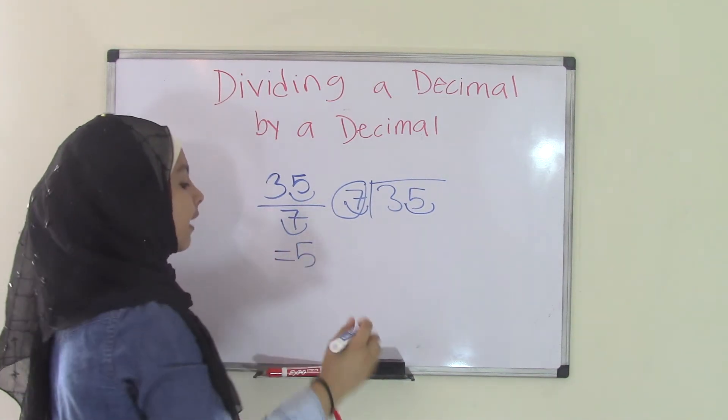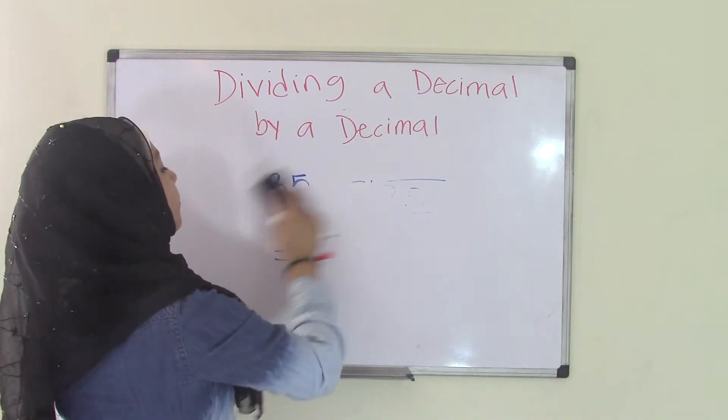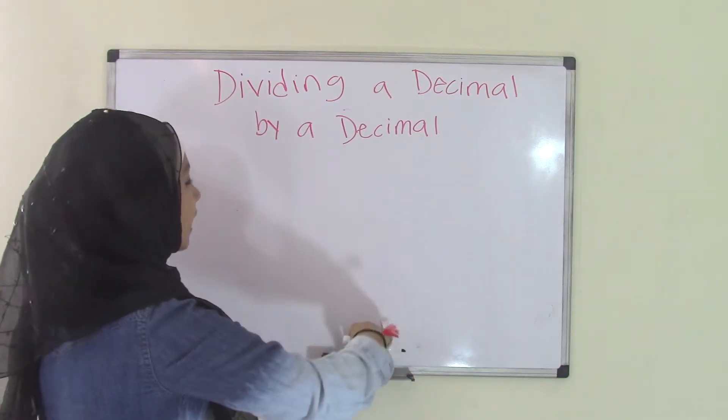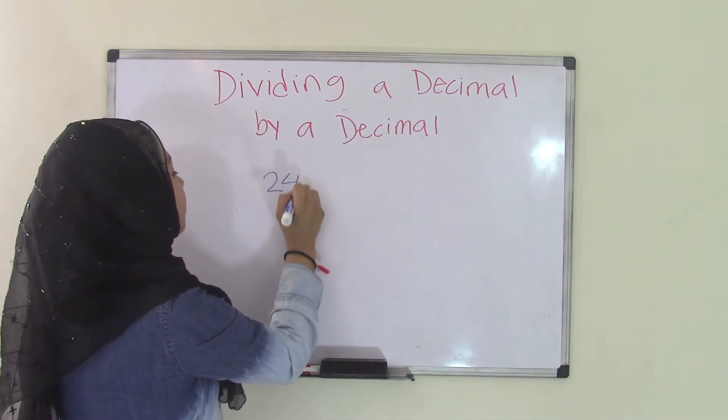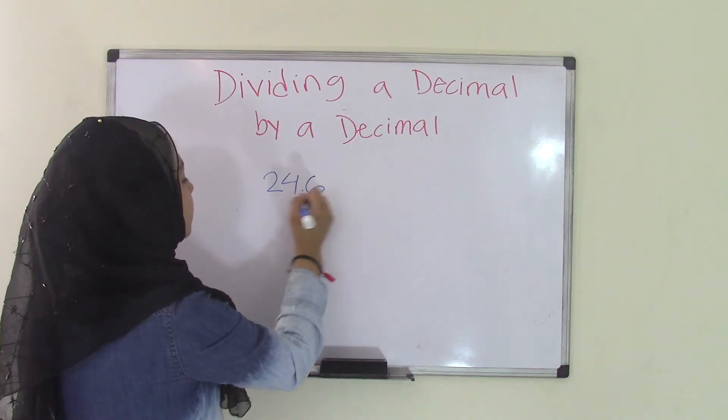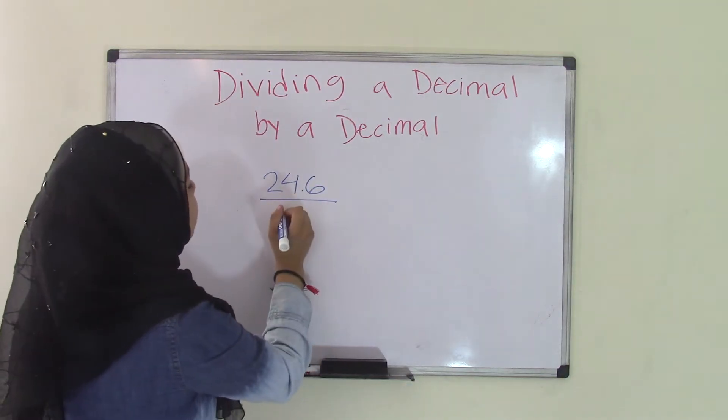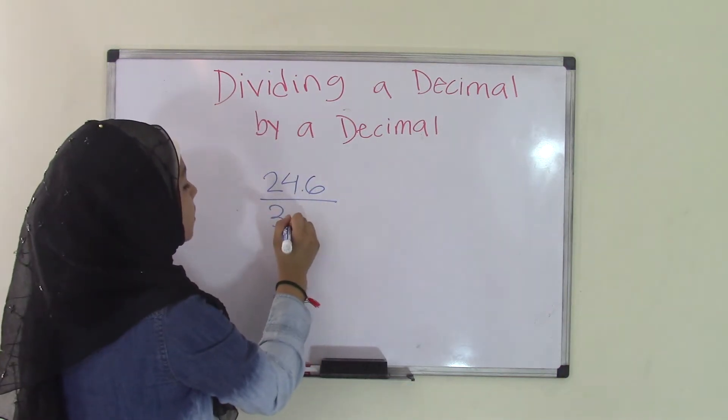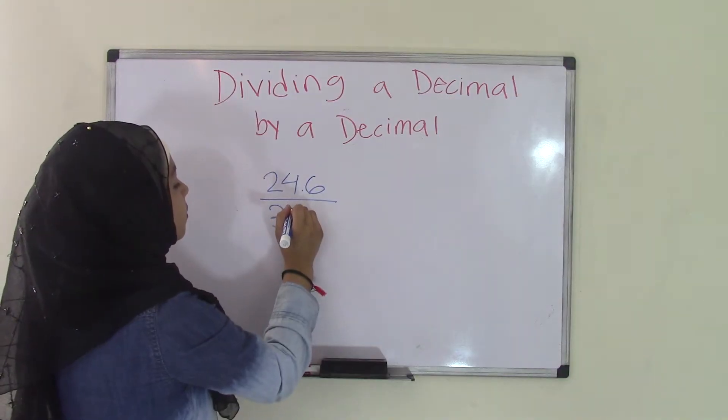So that was really easy right? Alright, how about we have a problem that is maybe 24.6 divided by 3.2.